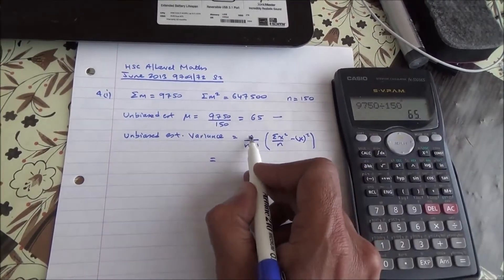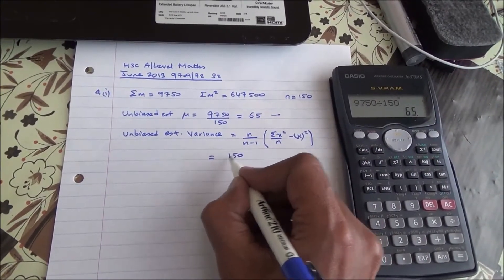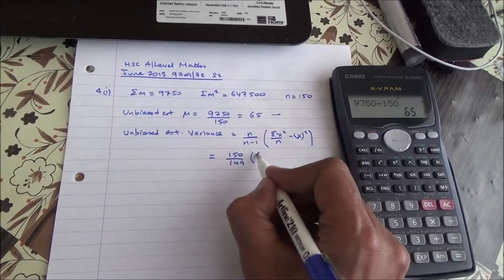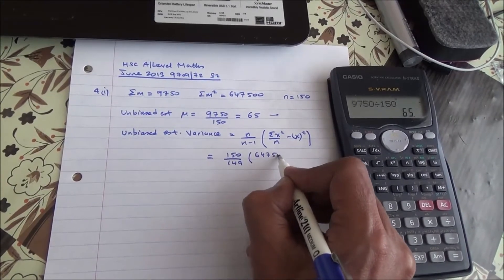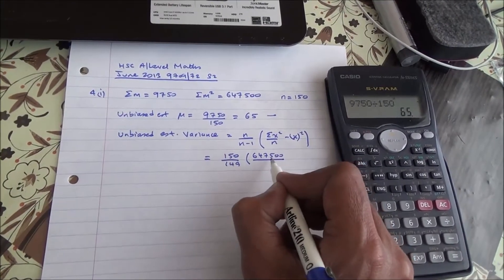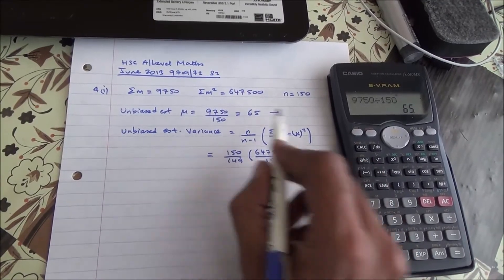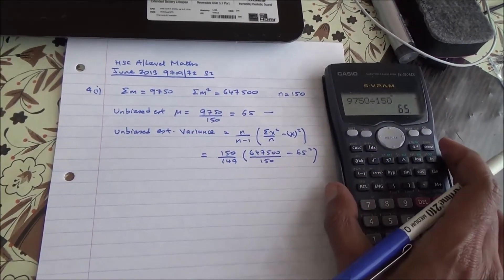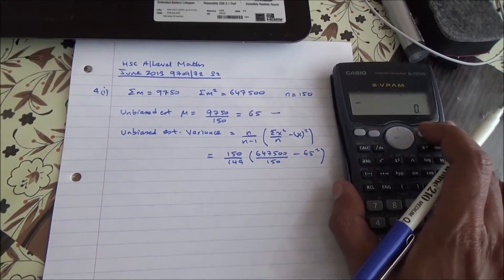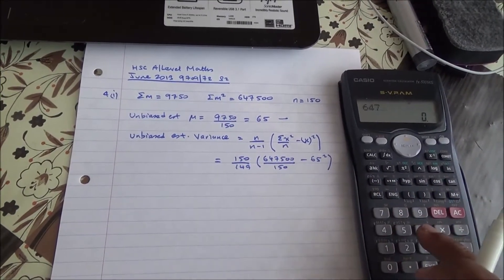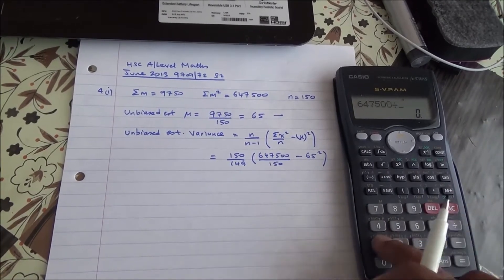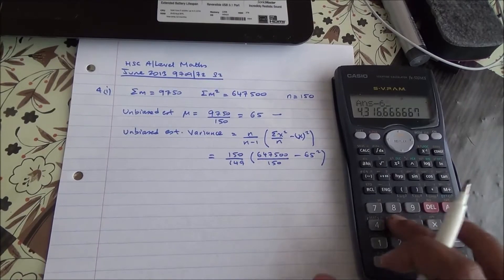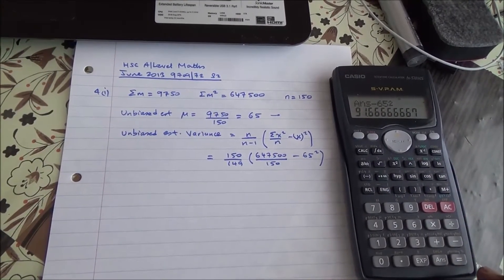All right, 150 divided by 149 times summation of x square has been given as 647,500 over 150 minus the mean, 65 to the square. So if we do that, 647,500 divided by 150, minus 65 to the square.